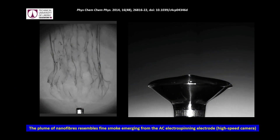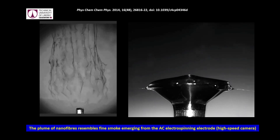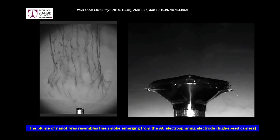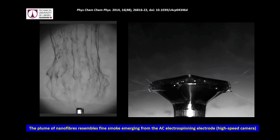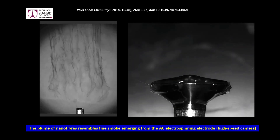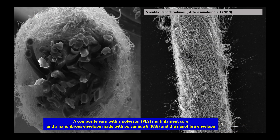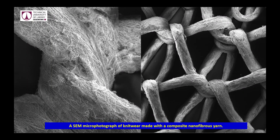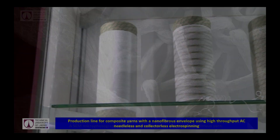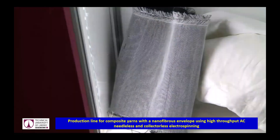This method of producing a massive nanofibres envelope around the yarn core can be implemented with cores of a linear density ranging from tens up to thousands of DTEX. Nanofibres composite yarns can be further processed by standard textile technologies, opening up the possibility to produce textiles with unique added properties. This approach may well lead to the widespread production and use of composite nanofibres yarns on an industrial scale.